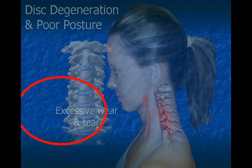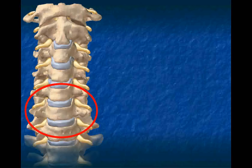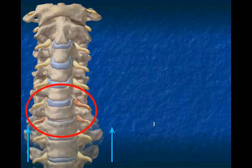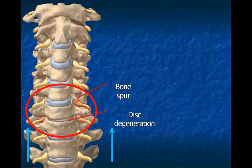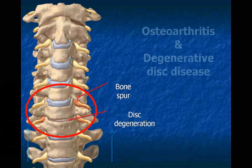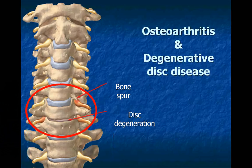Quite often, disc degeneration combined with bone spurs and wear and tear of the vertebrae occur at the same time. These changes in the health of the cervical spine and its discs are forms of osteoarthritis and degenerative disc disease.